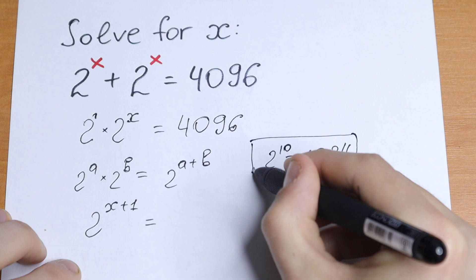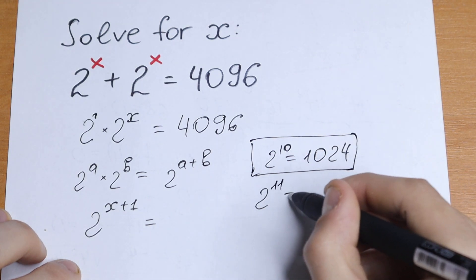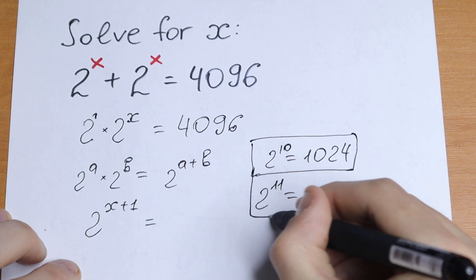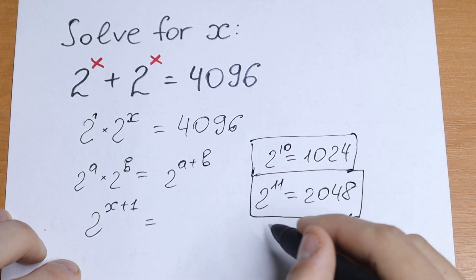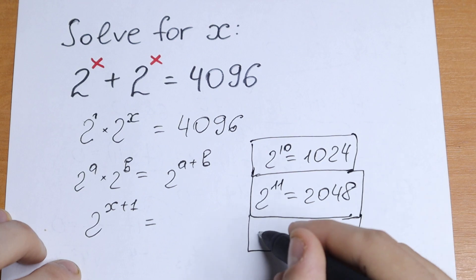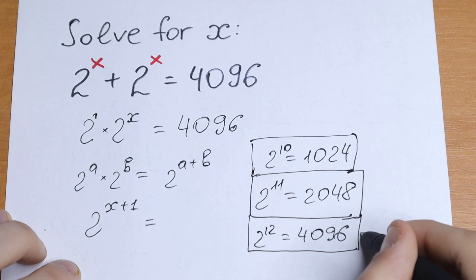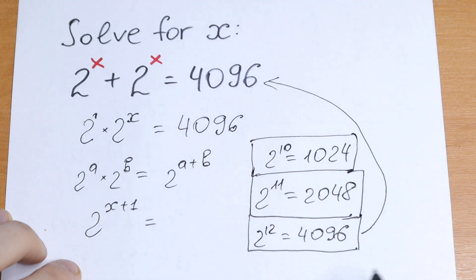And if we multiply it by 2 once more, we will have 2048, and this value is really good to know as well. And as a result, if we multiply it once more, 2 to the 12th power, we will have 4096, which is the same as right here. So this one is equal to 2 to the 12th power.